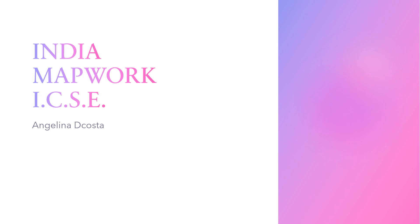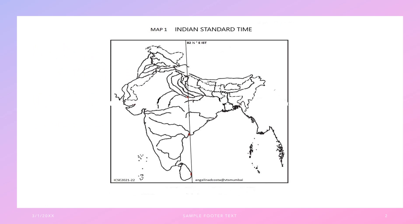Today we will be working on Mapwork India for ICAC second semester. We will be looking at Indian Standard Time on this map. See the three markings: one is here between River Ganga and River Yamuna, a red dot; then the Godavari Delta, another dot; and finally Sri Lanka, right at the edge. Connect these three markings with a ruler and draw a straight black line — that is your 82.5 degree East Indian Standard Time.